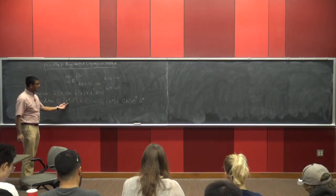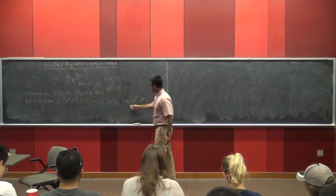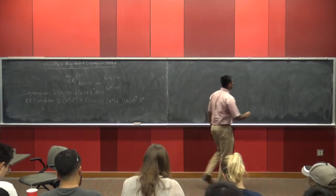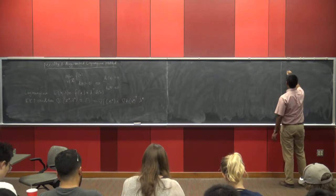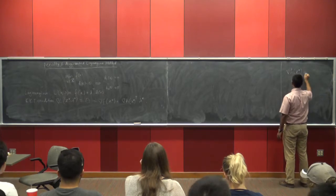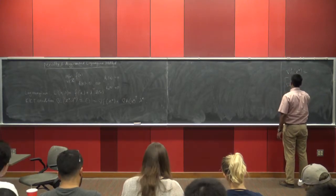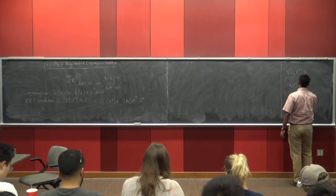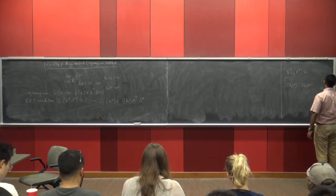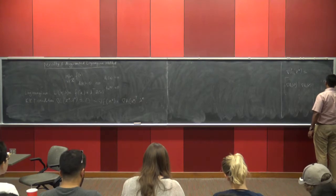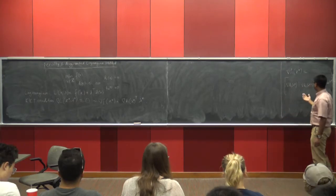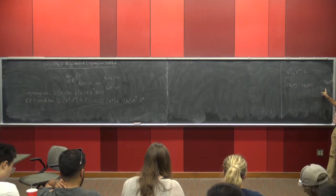From KKT conditions, if x is regular, at x*, λ*, the gradient with respect to x equals 0. This is: gradient f(x*) plus gradient h(x*)ᵀ λ* = 0. The assumption needed is that x* must be regular, meaning the gradient of h(x*) must be a full rank matrix — that is, the gradient vectors h1, h2, ..., hm at x* must be linearly independent.